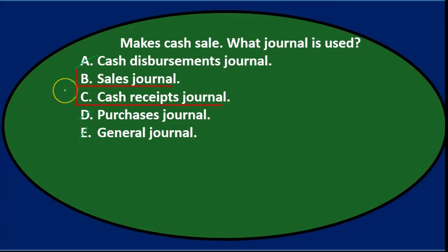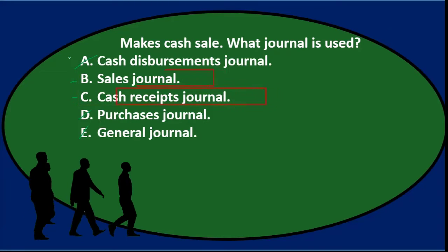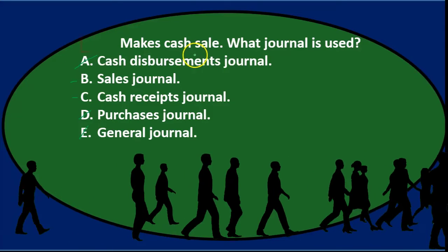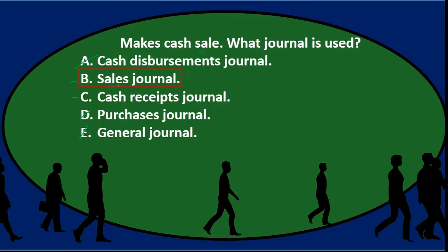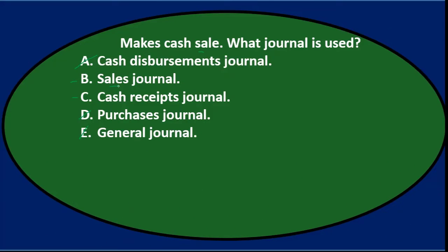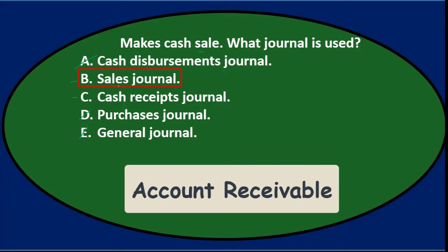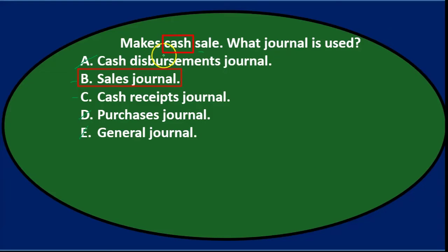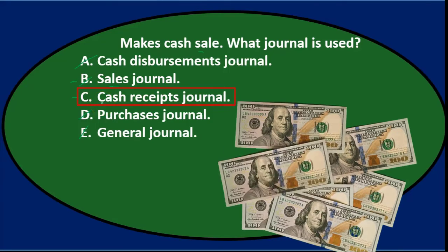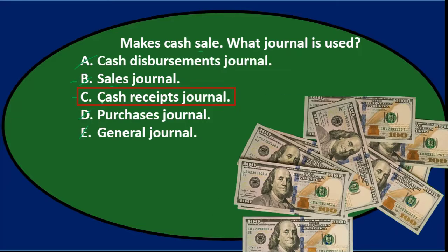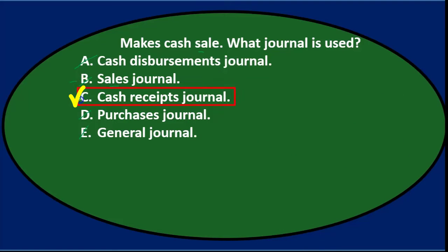We're left with B — sales journal — and C — cash receipts journal. This is where a lot of people get mixed up because we made a sale, and you would think the sales journal would apply. But the sales journal really means sales on account — accounts receivable must be involved. In this case we got cash, and that's the definition of the cash receipts journal. So it's not going to be in the sales journal because accounts receivable is not affected. The cash receipts journal is used anytime we get cash receipts, even if it's for a sale and we have a sales journal. So it's going to be in the cash receipts journal.